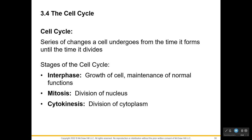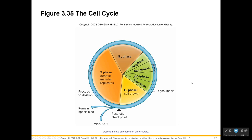A cell can do just mitosis and stop there — the result would be a cell with two nuclei, which could be a problem like cancer. Normally cytokinesis follows mitosis, where the cytoplasm and all the organelles get divided. Now you don't have one cell, but two. They both go back into interphase.